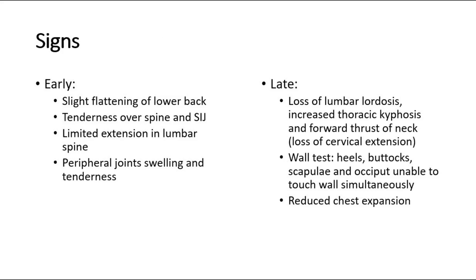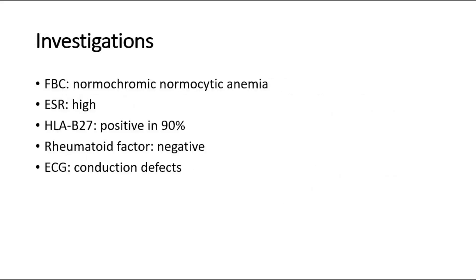For the signs, early signs may include slight flattening of the lower back, tenderness over the spine and sacroiliac joint, limited extension in the lumbar spine, and swelling and tenderness in peripheral joints. Late signs include loss of lumbar lordosis, increased thoracic kyphosis, and loss of cervical extension. Wall tests can also be performed, and you can expect to see reduced chest expansion, which is one of the diagnostic criteria in the modified New York criteria.